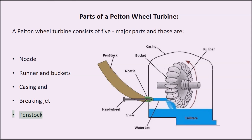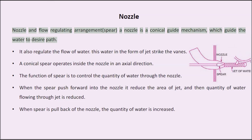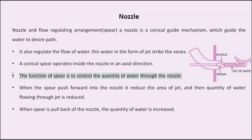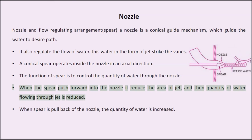The nozzle and flow regulating arrangement includes a spear. A nozzle is a conical guide mechanism which guides the water to the desired path and also regulates the flow of water. This water in the form of a jet strikes the vanes. A conical spear operates inside the nozzle in an axial direction. The function of the spear is to control the quantity of water through the nozzle. When the spear is pushed forward into the nozzle, it reduces the area of the jet and the quantity of water flowing through the jet is reduced. When the spear is pulled back, the quantity of water is increased.